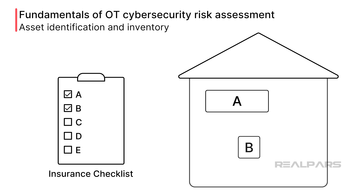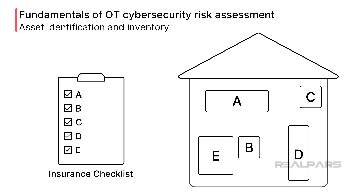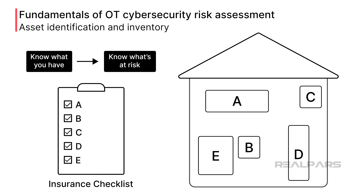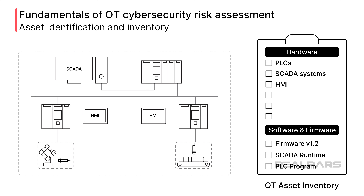When an insurance company is asked to insure your home, they want to know what is in the home so that they know what may be lost — what is at risk of loss or damage. The same holds true with risk assessments in cybersecurity. Inventorying and mapping of all of your OT assets is the first critical step. Everything should be listed in the inventory, including hardware such as PLCs, SCADA systems, and HMI stations.